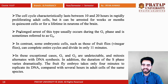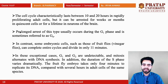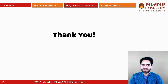By comparison, embryonic cells such as those of fruit flies (vinegar flies) can complete entire cell cycles in only 11 minutes, versus the 10–20 hours for human cells. In these exceptional cases, G1 and G2 cannot be detected and mitosis alternates with DNA synthesis. The duration of S phase also varies dramatically — the fruit fly embryo replicates its DNA in only four minutes, compared to several hours in human cells.